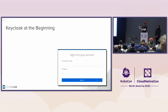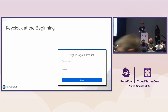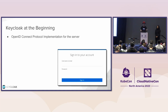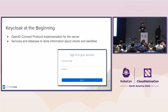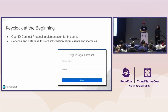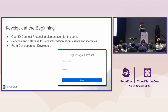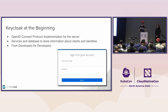Keycloak at the very beginning was always presenting a login screen to the user for entering username and password. To do that, you need an OpenID Connect protocol implementation on the server, because that was new and hot stuff at the time. You need some services, some database, some APIs to store information about your applications — which are called clients — and identities, which are called users. From the very beginning, it was from developers for developers. You could always extend Keycloak; it has APIs and service provider interfaces. You can do Java programming and do the things you need in your environment with Keycloak.